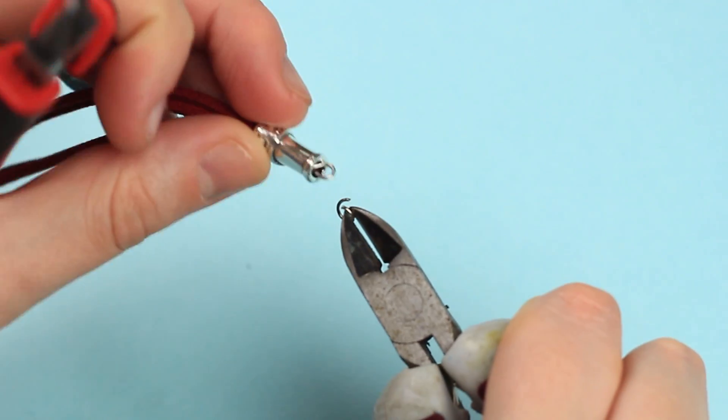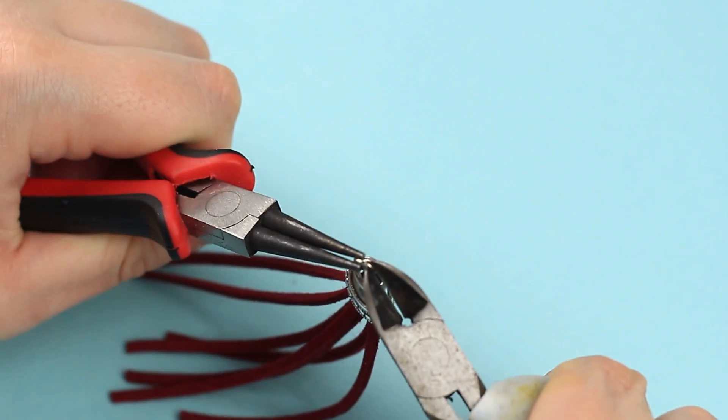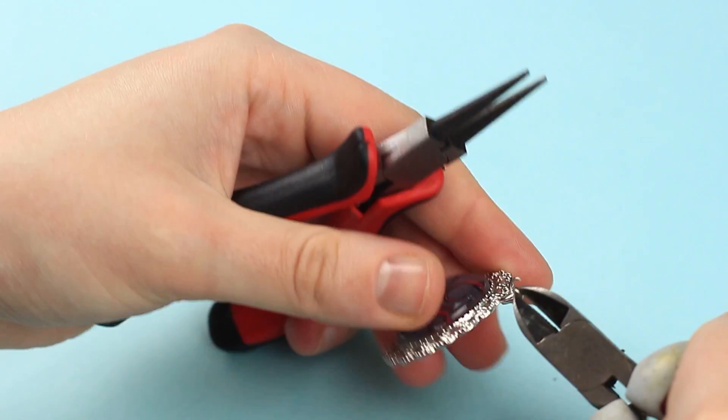Open a jump ring. Put the tassel on and close it. Put the rings on the glass disc and crystal charm in the same way.